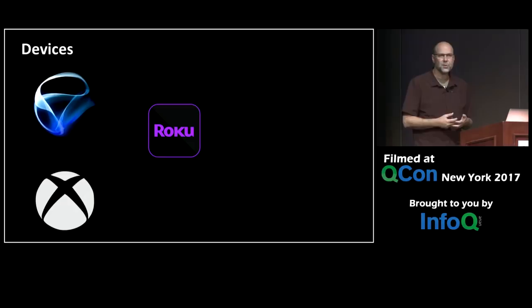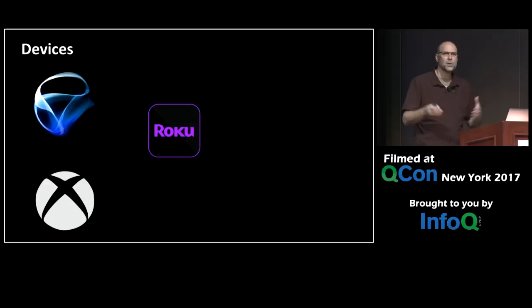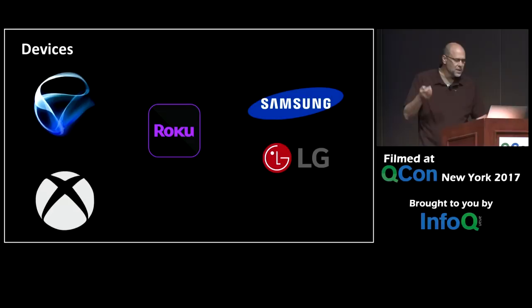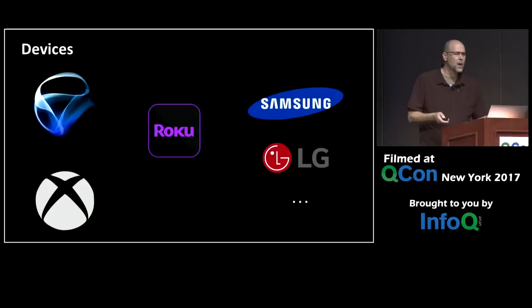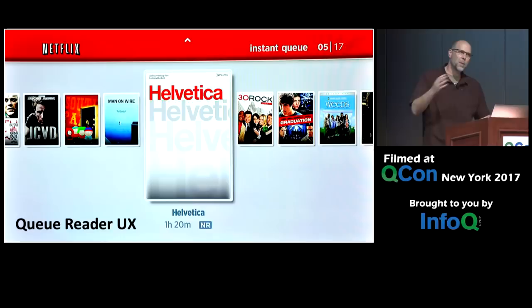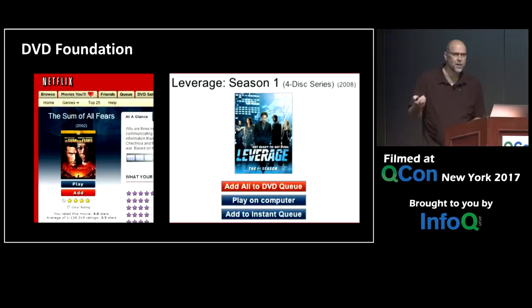We scored a deal with Microsoft and got Netflix onto the Xbox 360, which had a large installed base and a great network stack. Netflix was also expanding with turnkey SDK implementations in various CE devices like Samsung and LG Blu-ray players, DTVs, and other CE manufacturers. The user interface was primitive — it involved going to the website, adding a movie to your instant queue, coming back, and watching. It was a bare-bones implementation bolted onto the Netflix DVD infrastructure.